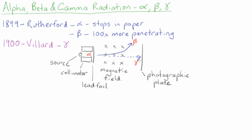The end result was he separated the three different types of radiation. The alphas were stopped in the lead foil, the betas were bent in the magnetic field, and the new type of radiation, the gammas, went straight ahead and weren't affected by the magnetic field.